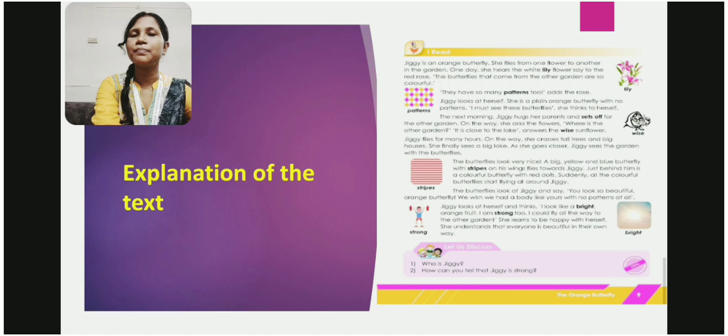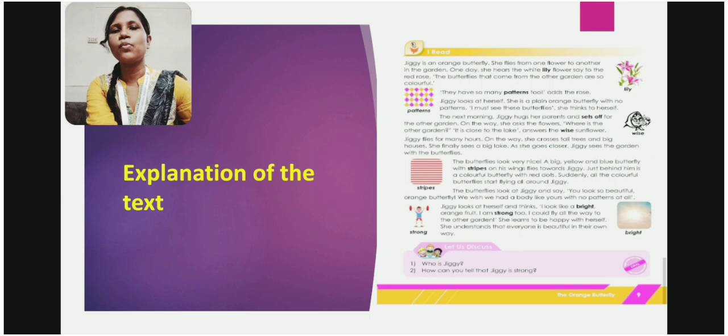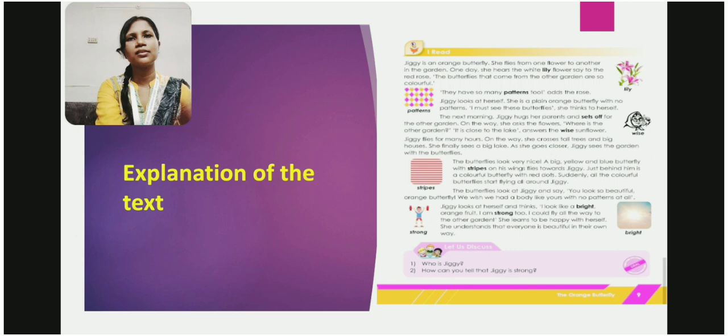Once what happened, Jiggy, she was moving from one garden to another, that is one flower to another. Then, one day while she was flying from one flower to another, suddenly she heard that a white lily, she was discussing with the red rose. What they were discussing? They were discussing that the butterflies that come from the other garden are so beautiful, having a beautiful pattern in their body. Jiggy heard their conversation.